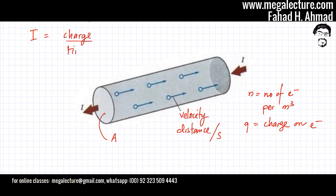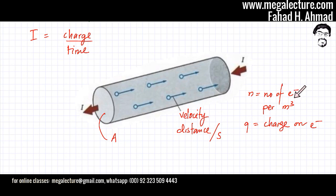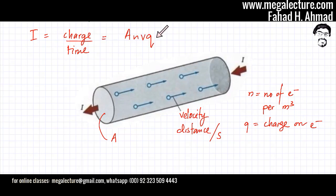So it's charge over time. So, if we have all these values — cross-sectional area, the velocity of the particles, the number of electrons per meter cube in that particular material, and also the charge on the electron — then we're going to show that A, N, V, Q is basically equal to charge over time.